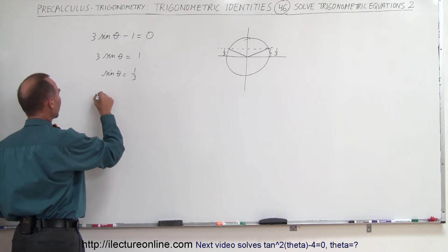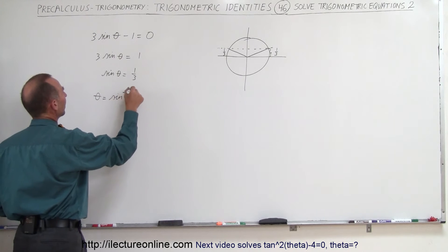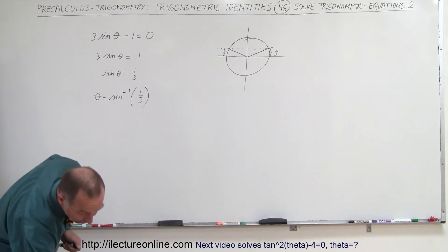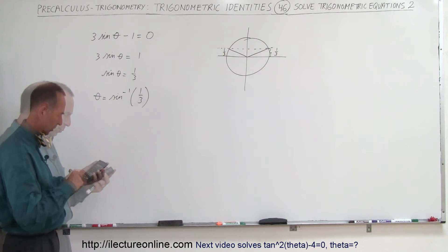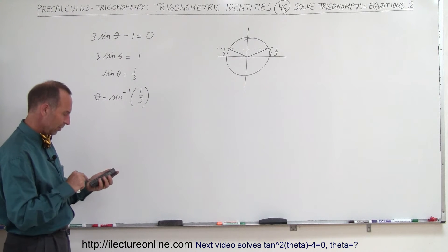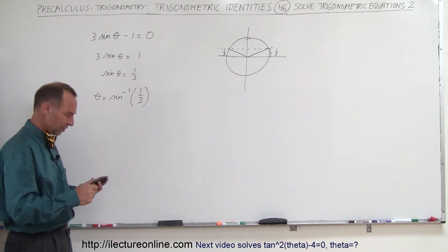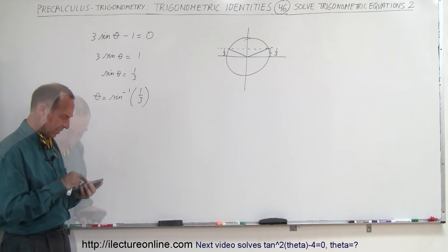Another way of doing this we can say theta is equal to the inverse sine of 1 third. If we then use our calculator to figure out what that is equal to: 1 divided by 3 equals, take the inverse sine and we get 19.47 degrees.